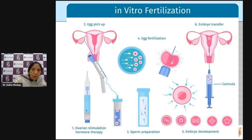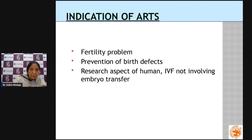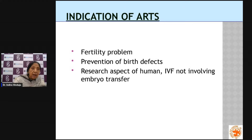Whether fertilization occurs in the body, in a dish, or in the laboratory, once embryos develop they are collected into a cannula and deposited into the uterus — that is the embryo transfer. The procedures are performed in three main situations: fertility problems, to prevent birth defects, and for research purposes, since this is the only procedure where we ethically and legally obtain human eggs or sperm for research.